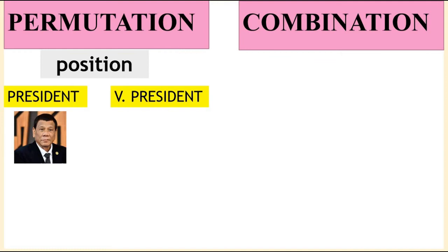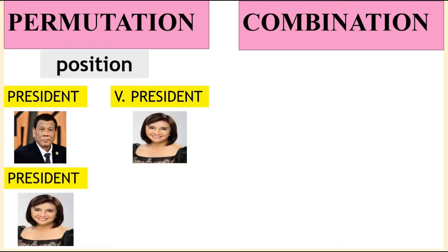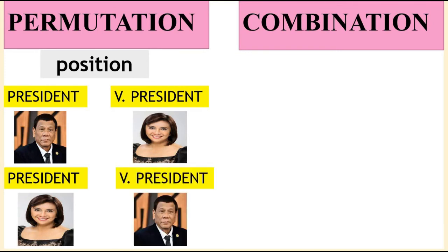— that is different from the president being Mrs. Robredo and the vice president being Mr. Duterte. So in this case the order matters, and therefore it is permutation.